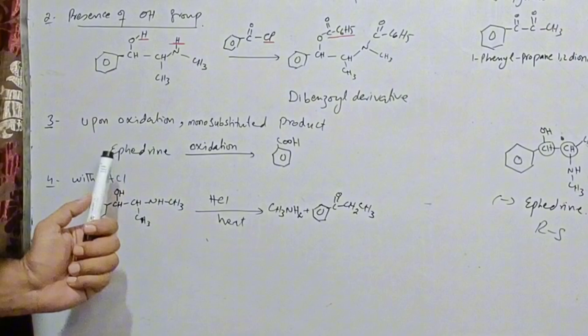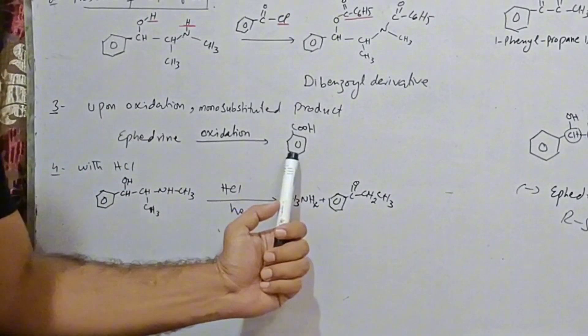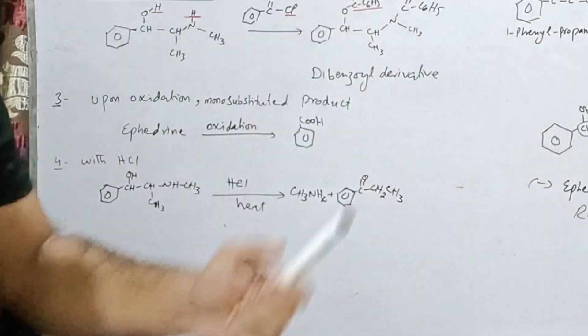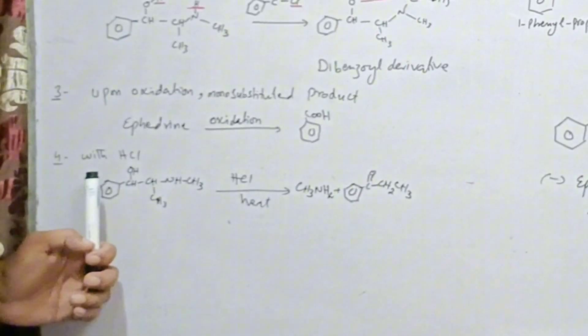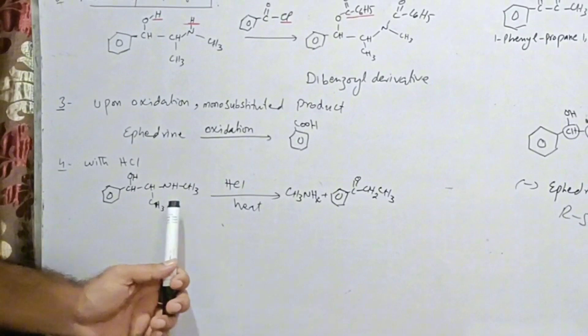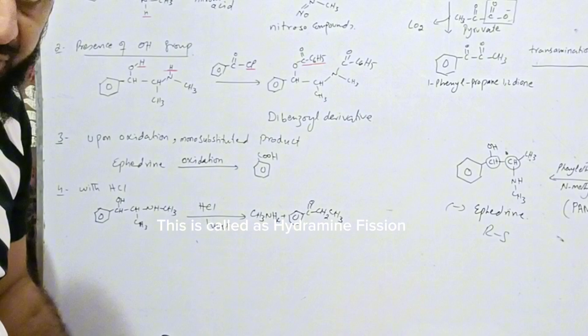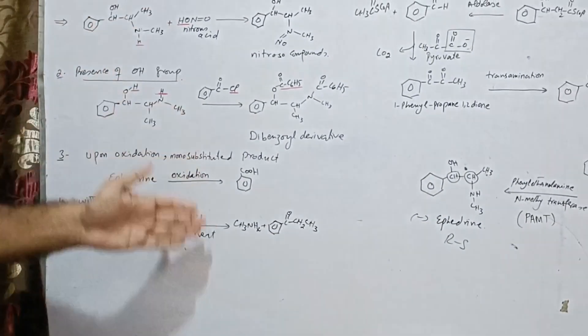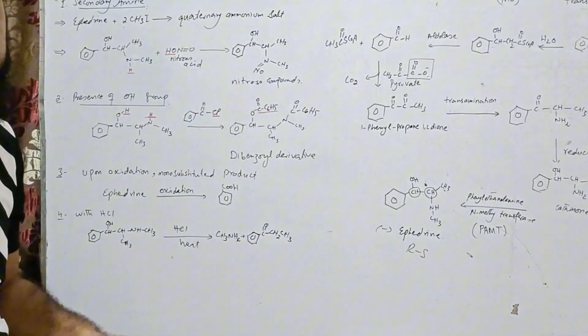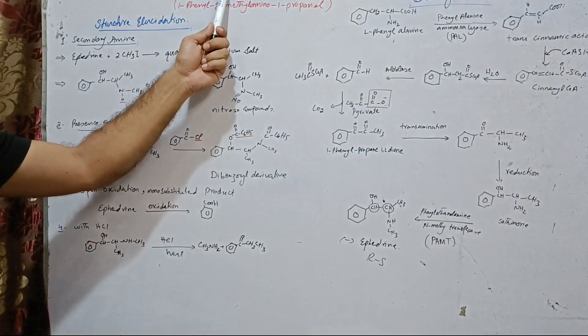During the oxidation of ephedrine, we get mono-substituted product, means benzoic acid. It shows that there is no other substitution present on the ring. So if we treat this with HCl and heat the structure, then we get methylamine and ethyl phenyl ketone. So all these things show that the structure of ephedrine must be this.